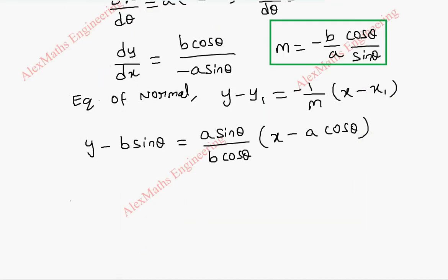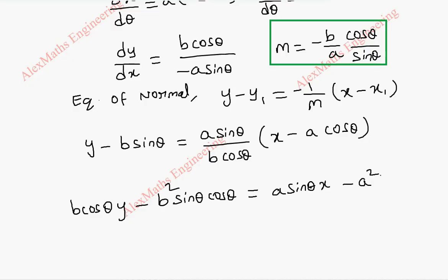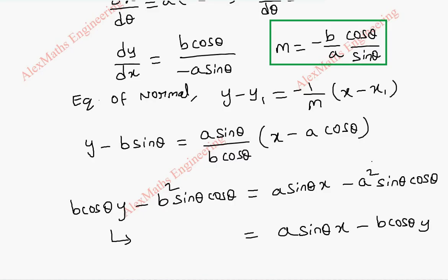By cross multiplication, we get b cos theta times y minus b squared sine theta cos theta equal to a sine theta times x minus a squared sine theta cos theta. Now, let's take terms to the other side: a sine theta x minus b cos theta y. This term will be taken to the other side, so we have a squared sine theta cos theta and already we have minus b squared sine theta cos theta.